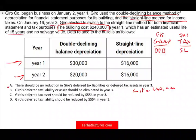Answer A says there should be no reduction in Gyro's deferred tax liability or deferred tax asset. There is going to be a reduction — some sort of a reversal — so eliminate A. Answer B says once we switch, everything reverses 100% and the asset or liability should be eliminated entirely. No — when we switch from double declining balance to straight line, there will be some reversal, but not 100%, because you are not starting at the same level. So there would still be some deferred tax asset or deferred tax liability remaining. Eliminate B.